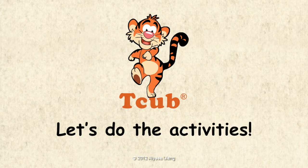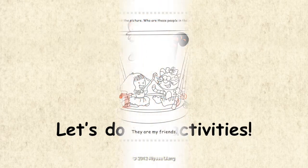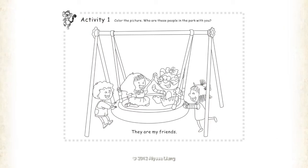Let's do the activities! Activity 1: Color the picture. Who are these people in the park with you? They are my friends.